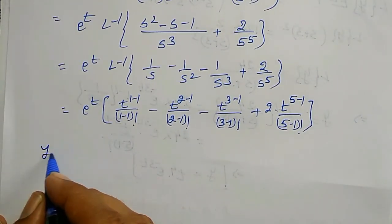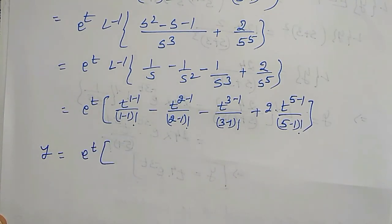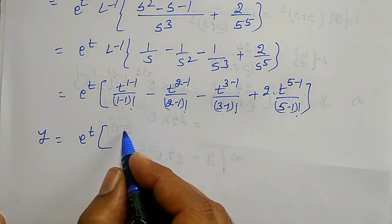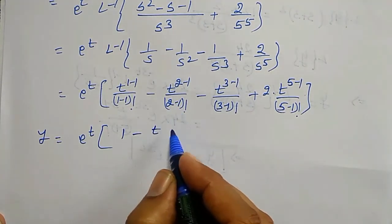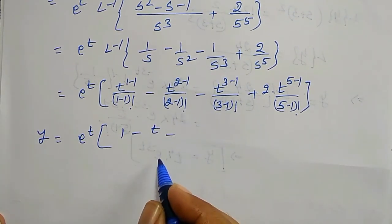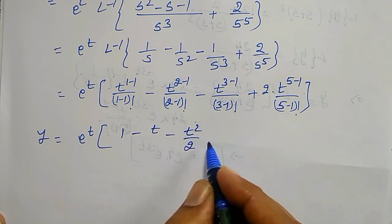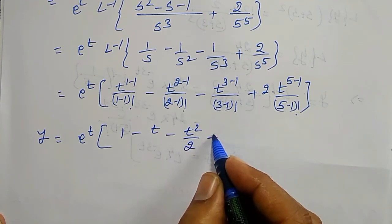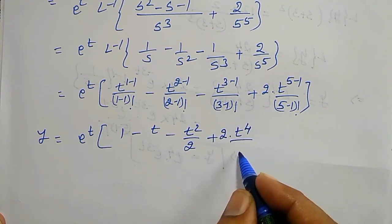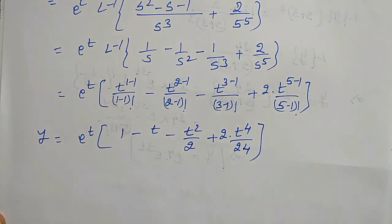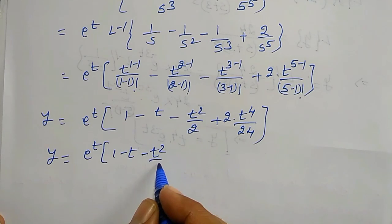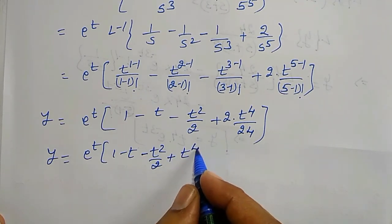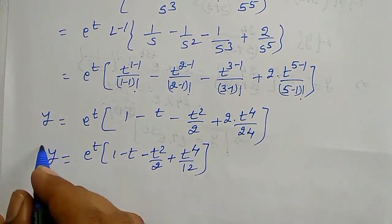Simplifying: e^t times [1 − t − t²/2 + 2t⁴/24], and since 2/24 = 1/12, the final answer is y = e^t · (1 − t − t²/2 + t⁴/12).